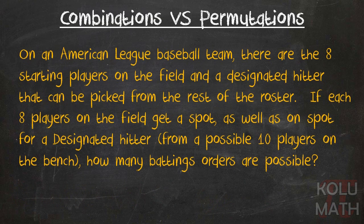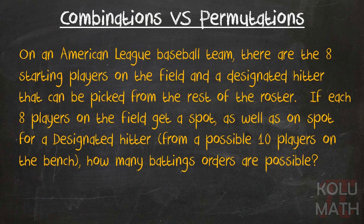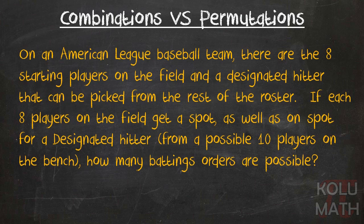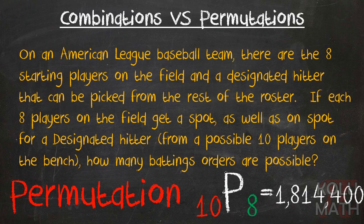On an American League baseball team, there are eight starting players on the field and a designated hitter that can be picked from the rest of the roster. If each eight players on the field get a spot, as well as a spot for the designated hitter from a possible 10 players on the bench, how many batting orders are possible? That's a permutation. So let's go ahead and pop it in the equation. 1,814,400 different batting orders are possible with a team of 10. Isn't that kind of crazy?